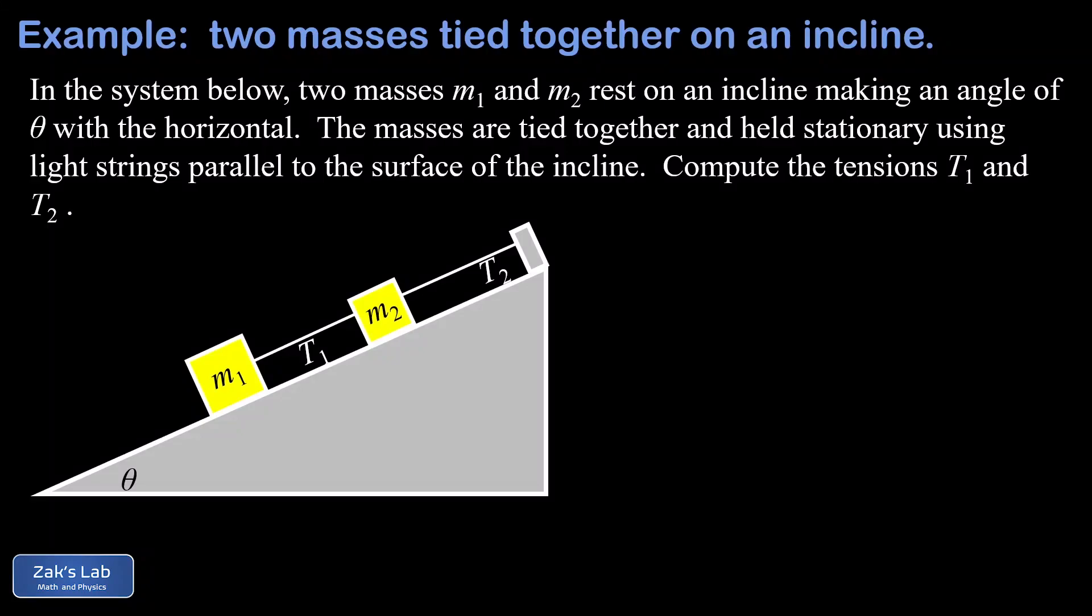In this problem, we're given two masses that are resting on the surface of a smooth incline. So we're not thinking about any friction forces parallel to the surface here. And these masses remain at rest because they're tied together with strings. So there's a string between the two masses, M1 and M2. And then M2 is tied to a rigid support at the top of the incline. So nothing is moving here. And of course, the problem is to find the tensions in these two strings.